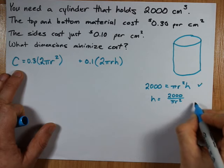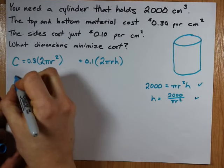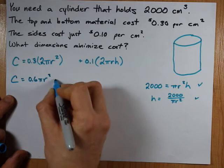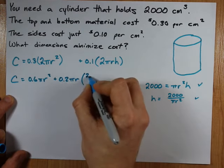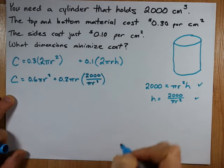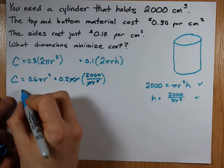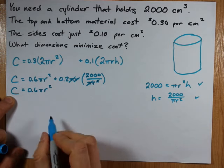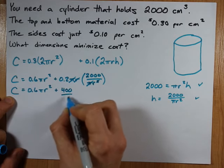Instead, I want to have this expression for h, which I will take and plug in to this expression. c equals, I'm going to clean this up a bit, that's 0.6 pi r squared plus 0.2 pi r times h. But h is 2,000 over pi r squared. There's going to be some more cleaning up I can do here. There's a pi here and a pi here that cancel out. I can cancel out that r with that r. And so my cost function as a function of only r is now 0.6 pi r squared plus, I believe that's 400 over r.